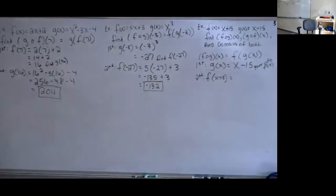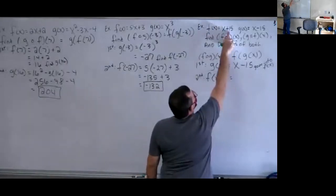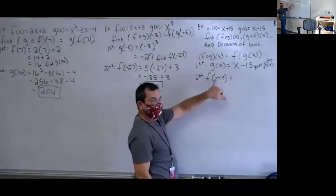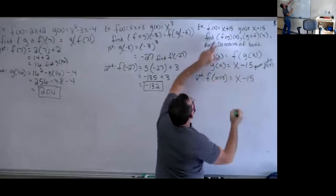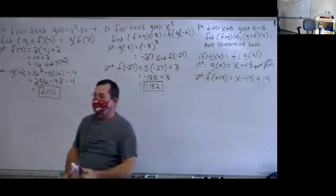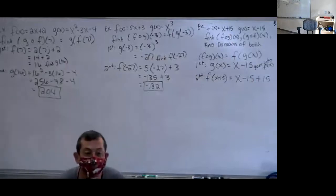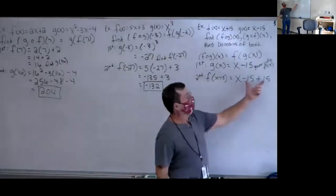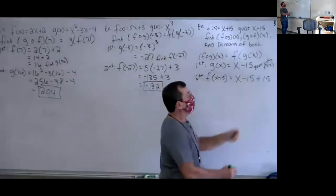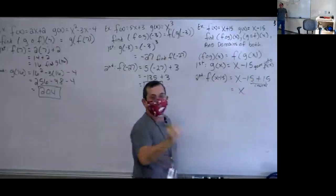So I have (x minus 15) plus 15. The negative 15 and positive 15 cancel, so f of g of x equals just x. These cancel out, so that f of (x minus 15) is definitely x.